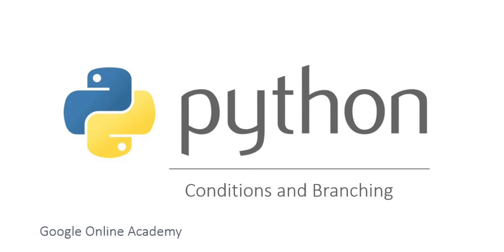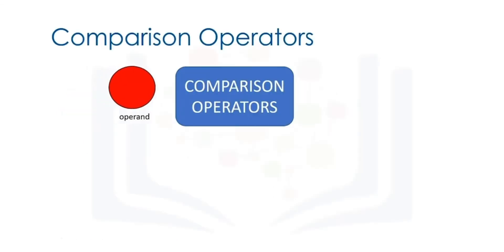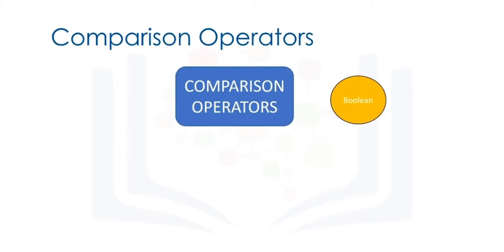In this video, you will learn about conditions and branching. Comparison operations compare some value or operand. Then, based on some condition, they produce a boolean.